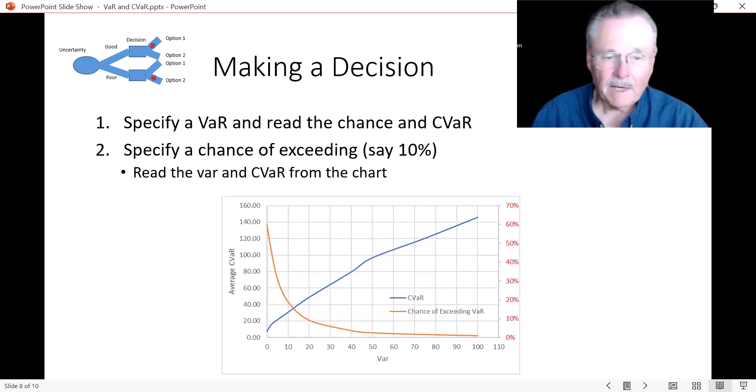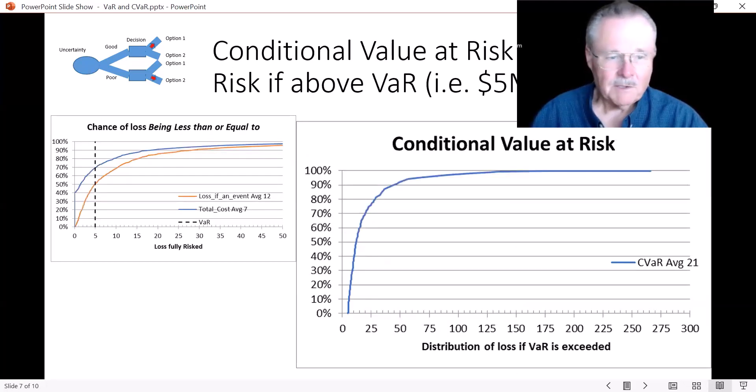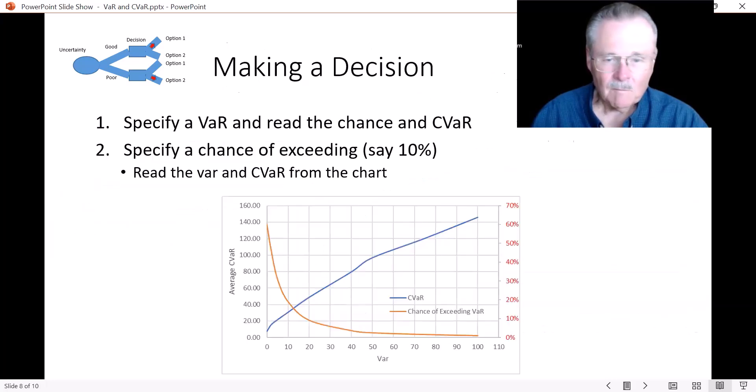On the other hand, I could specify a chance of exceeding, in which case I need to come back to this chart and my 10% would be here. And once again, I'd come up with my like 19. And at 19, I also have a CVaR of close to 50 and a chance of incurring that only 10% of the time.